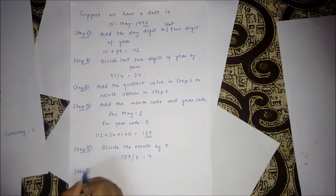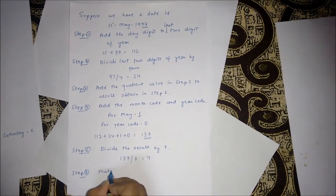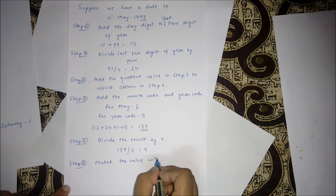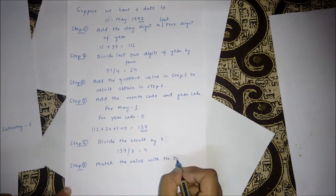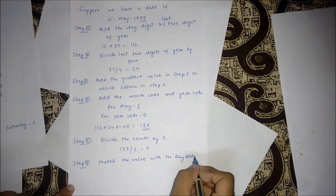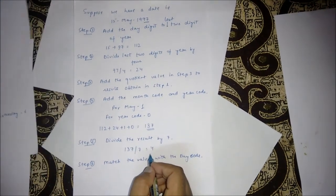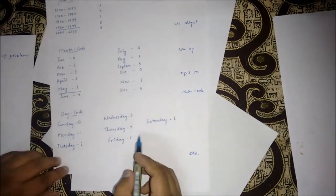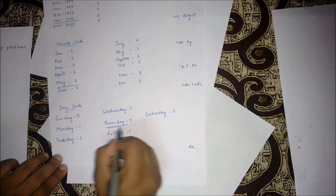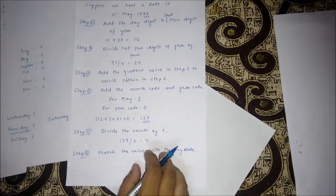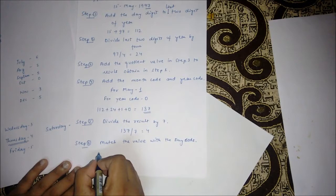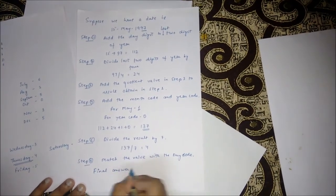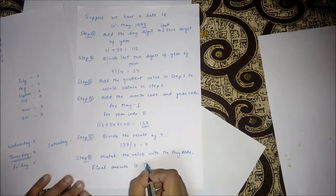Step 6 is match the value with the day code. We get 4 as an answer. If we match the value with the corresponding table, we get Thursday as an answer. So our final answer is Thursday.